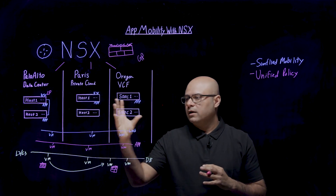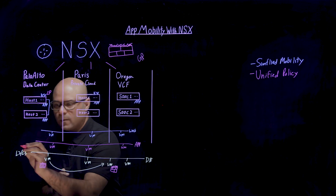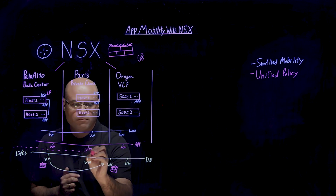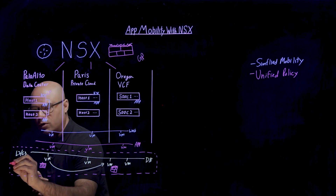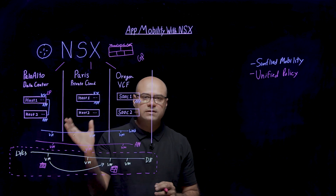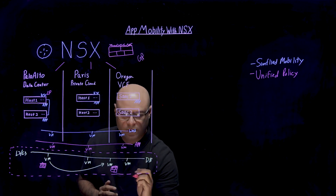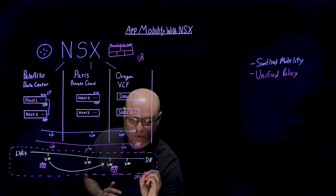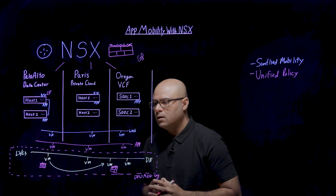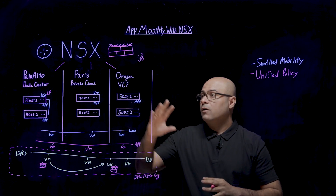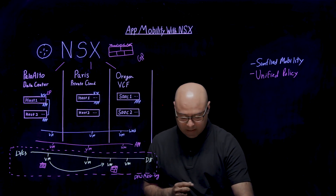Combining networking and security policy, we can also do DFW microsegmentation. As you can see, these networks are very flat. We want to make sure that east-west communication of these VMs stays within their own layer, so we can create DFW microsegmentation through NSX. Combining both brings low business risk for our customer.